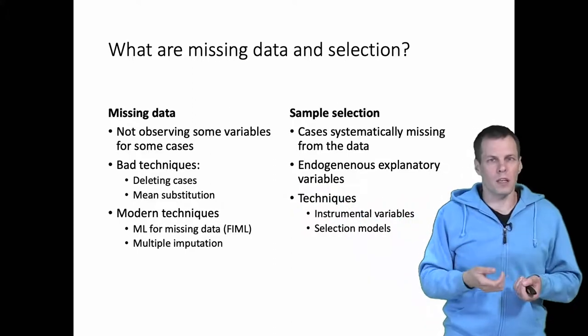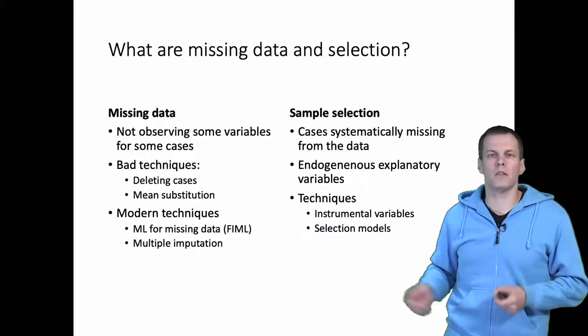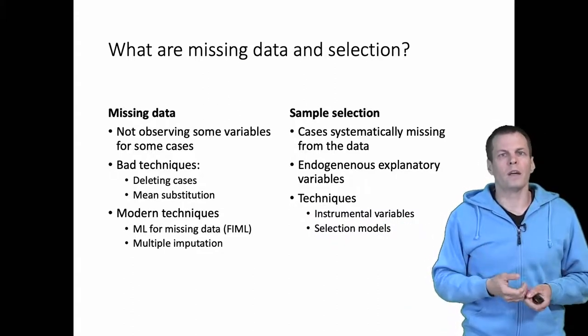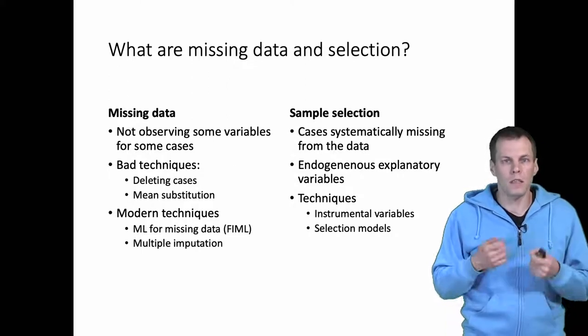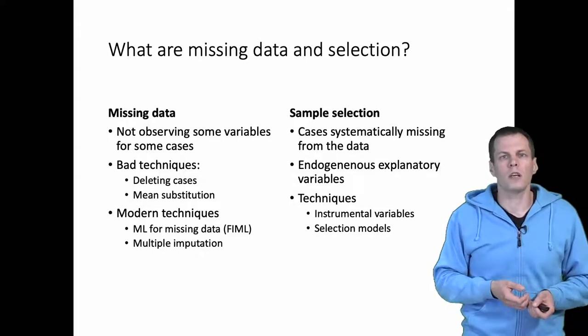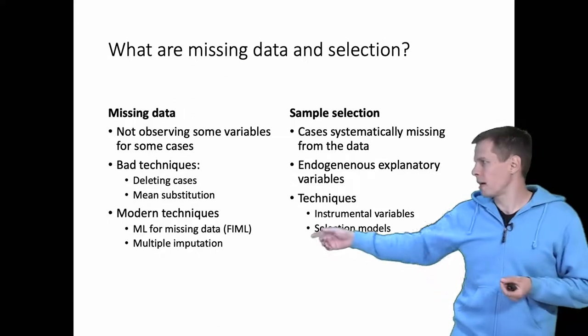There are better techniques for dealing with missing data. You can use maximum likelihood estimation that takes care of the missing data problem by fitting the model to the data that you have and ignoring the missingness. This is called full information maximum likelihood, or FIML, because it takes the information from those cases that are partially observed.